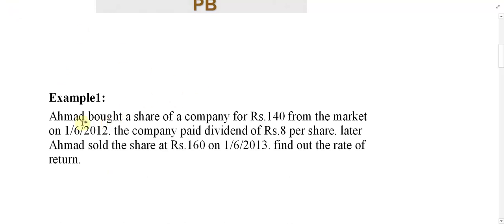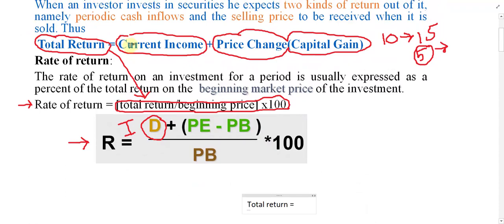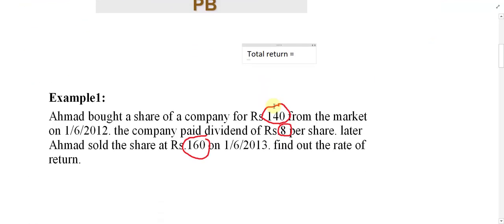Let me give a simple example to calculate rate of return. Ahmad bought a share of a company for 140 — purchased for 100 from the market on 1/6/2012. The company paid a dividend of 8 per share. Ahmad later sold the share for 160 on 1/6/2013. Find the rate of return. First, find the total return: total return equals current income plus price change.